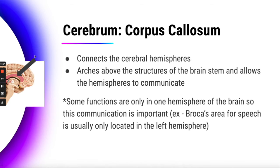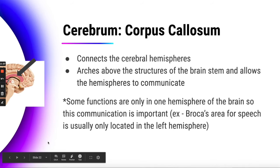This communication is really important because some functions of the cerebrum are only in one hemisphere. For example, Broca's area, which helps control speech, is usually only located in the left hemisphere. So if the corpus callosum is damaged, you might know what you want to say but can't actually form the words. It lets communication happen between the two halves because some functions are only controlled by one hemisphere.